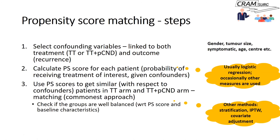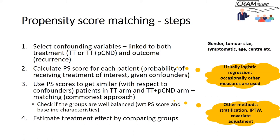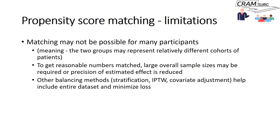You then check if the groups are balanced — balanced with respect to the propensity score and baseline characteristics like gender, tumor size, and age. Finally, you estimate the treatment effects by comparing these well-balanced groups. That's it — you've done the propensity score matching.